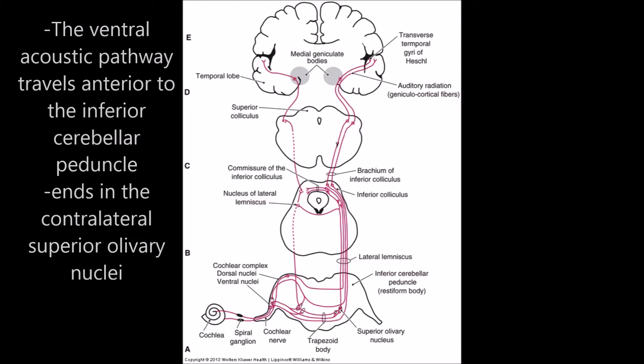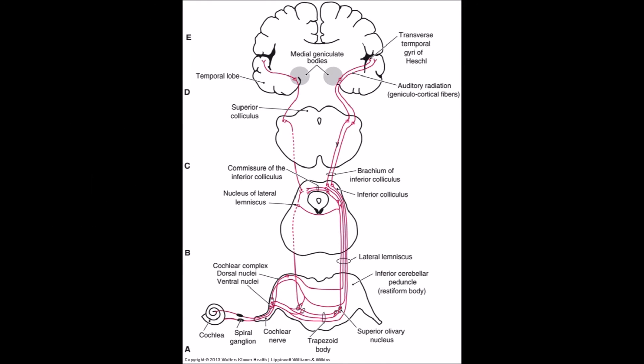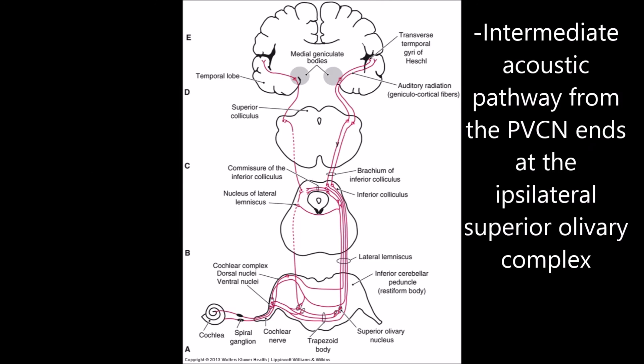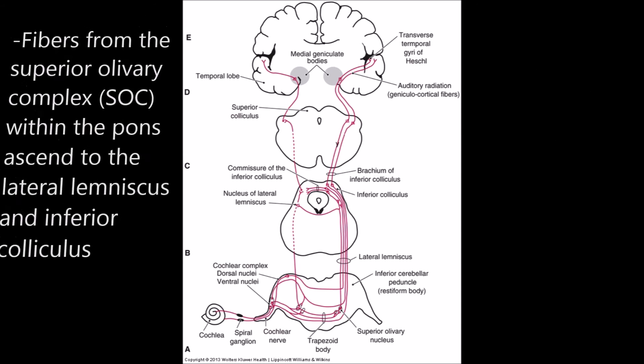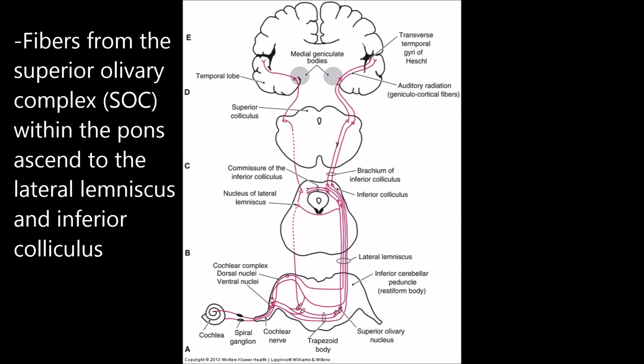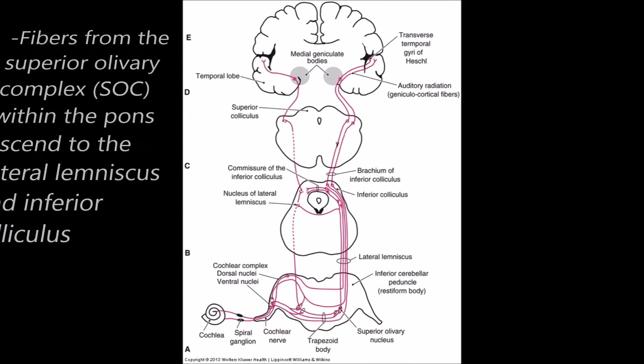The ventral acoustic pathway travels anterior to the inferior cerebellar peduncle and ends in the contralateral superior olivary nuclei. The intermediate acoustic pathway from the PVCN ends at the ipsilateral superior olivary complex.